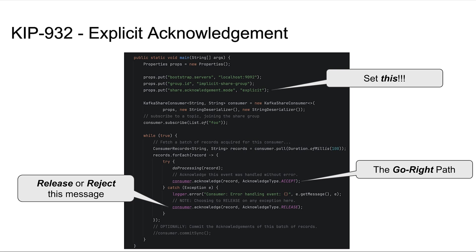In the case you want fine-grained control over the lifecycle of each individual message, this release gives you explicit acknowledgement functionality. Here's an example of the Share Consumer API where we use a new configuration parameter called Share Acknowledgement Mode, and we set that value to explicit. Then we try to process each message. In the go-write path, we call the acknowledge method on the consumer to accept a message. If there's an exception, we might use the release or reject acknowledgement types on that individual message. Look for more enhancements on KIP 932 in future releases.